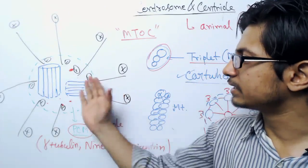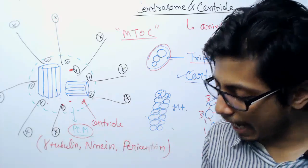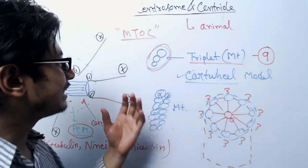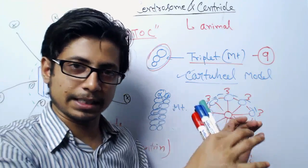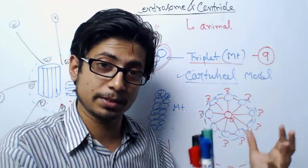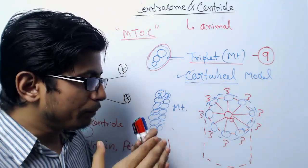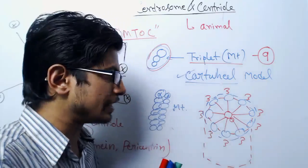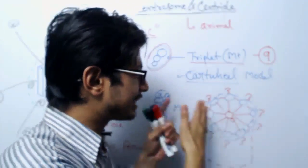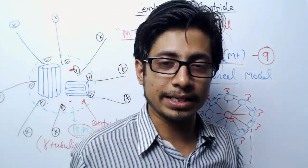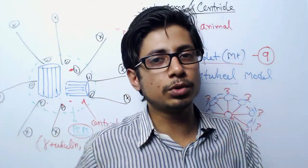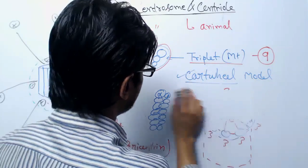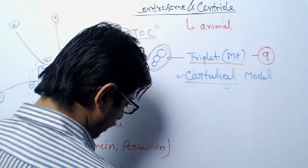This centriole structure is only found in animal cells, with the centrioles at 90 degrees. During cell division, only one centrosome is present per cell. Before chromosomal segregation — even before metaphase, during interphase — the centrosome divides and duplicates itself, so from one centrosome two centrosomes are made.